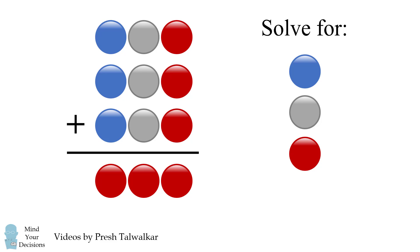The challenge is to solve for each color of each circle. It's not stated in the problem that was distributed, but you can assume each color represents a different digit. Can you figure it out? Give this problem a try and when you're ready keep watching the video for a solution.